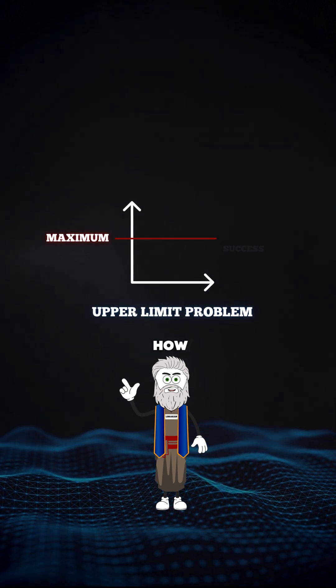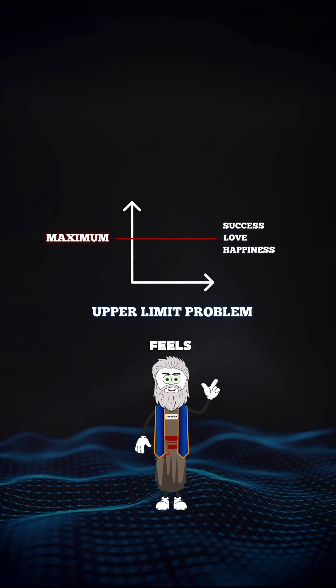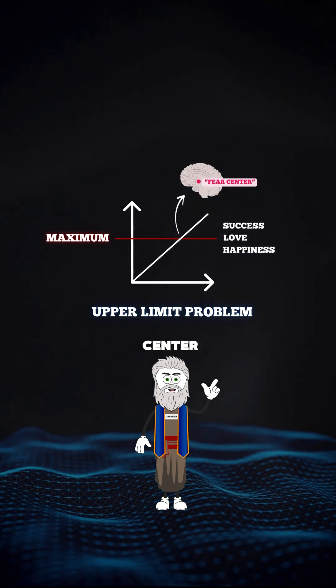It's called the upper limit problem. Your brain has a subconscious ceiling for how much success, love, or happiness feels allowed. Cross it, and the brain's fear center, the amygdala, fires.